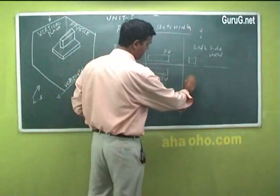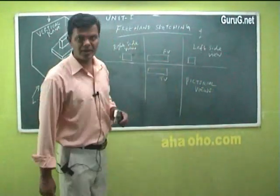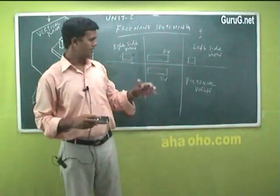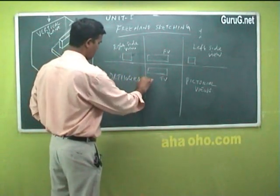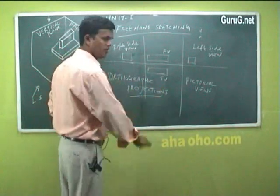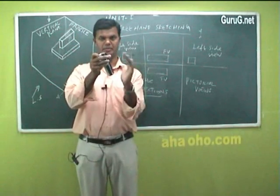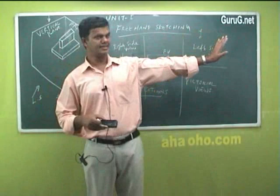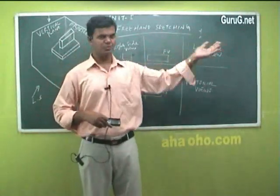These are generally called pictorial views. The word pictorial means it is picturesque — you are looking at a picture and drawing it; it is called pictorial views. And these are also called orthographic projections. What does orthogonal mean? It should make a 90-degree apart — orthogonal means perpendicular, 90 degrees apart. So the top view on the plane — the vertical and horizontal are 90-degree difference — and the plane on this side also makes a 90-degree distance apart.